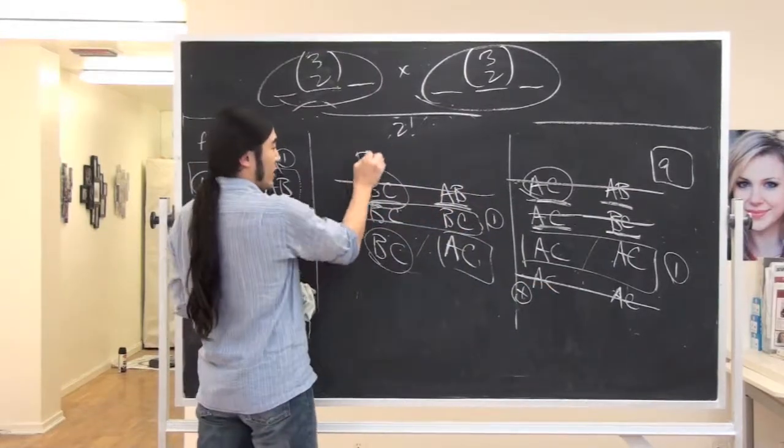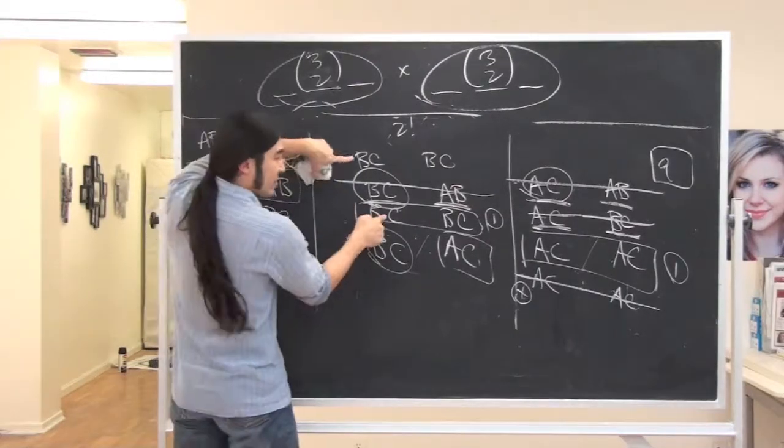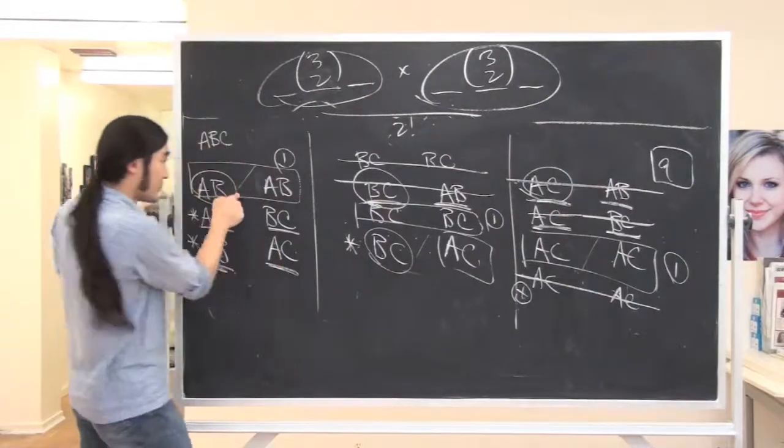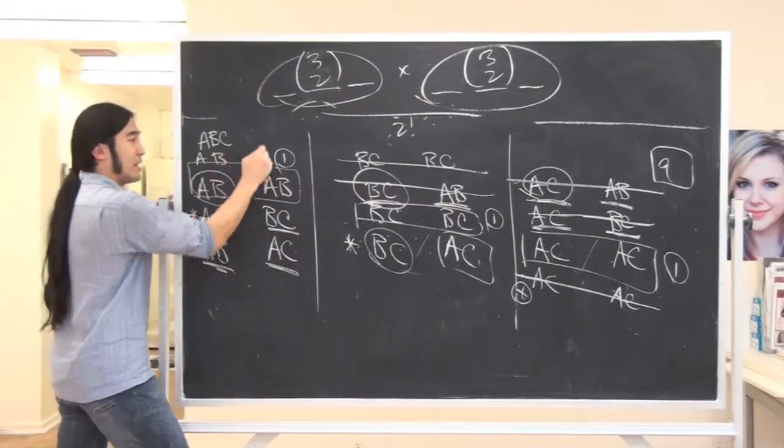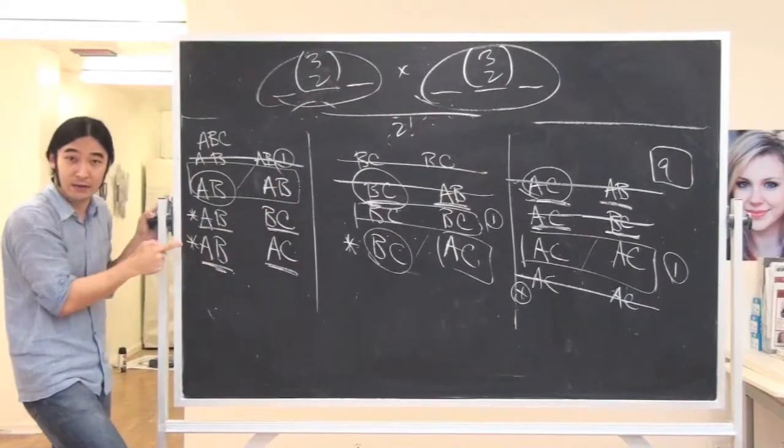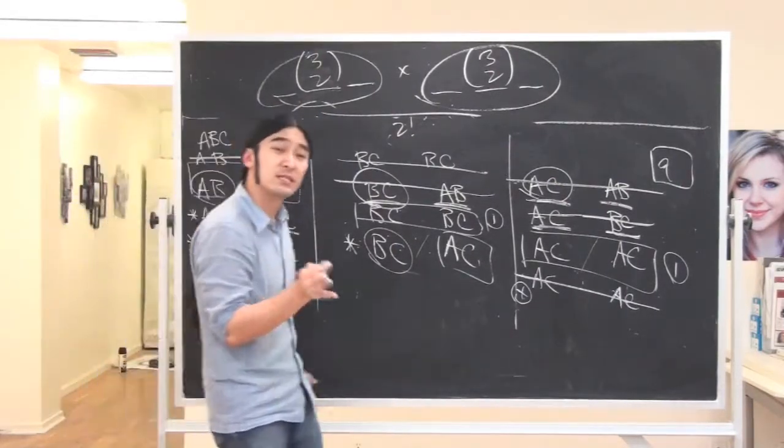I'm also going to artificially add another B, C. If that were the case, just humor me for a second, then when you divide it by two, it would kill this and give me the right count. Same thing over here. If I artificially added another A, B, A, B group, when I divide it by two, it would kill this and give me the right count. Then you're like saying, okay, that's retarded. You're just doing whatever you want. It's okay. We can be systematic.